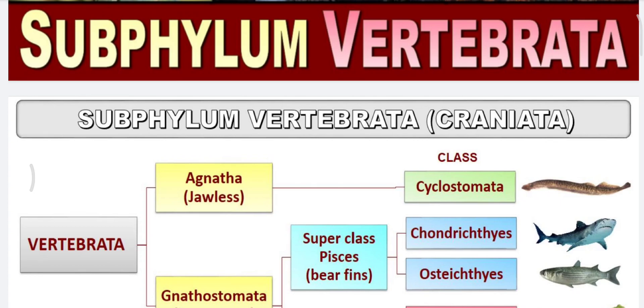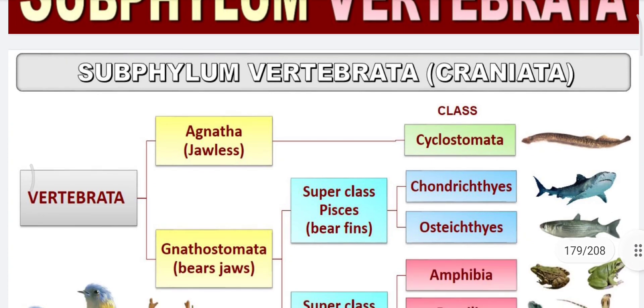Hi students, today's topic is subphylum Vertebrata. Vertebrata is also called Craniata. Urochordata and Cephalochordata fall under Acraniata, whereas Vertebrata is called Craniata. Urochordata and Cephalochordata are also called Protochordata.